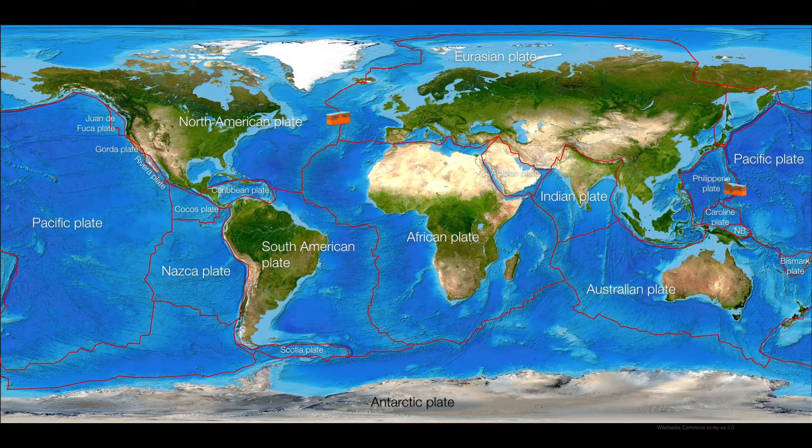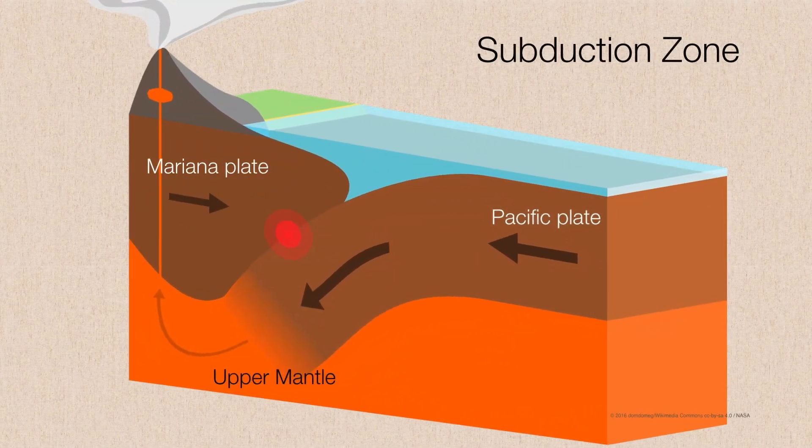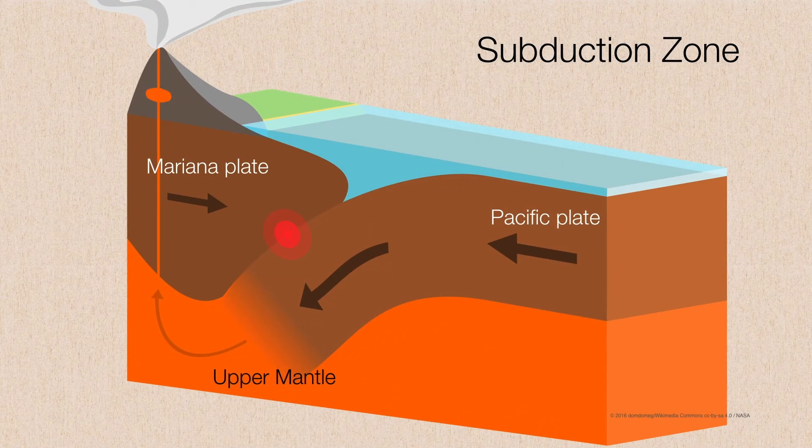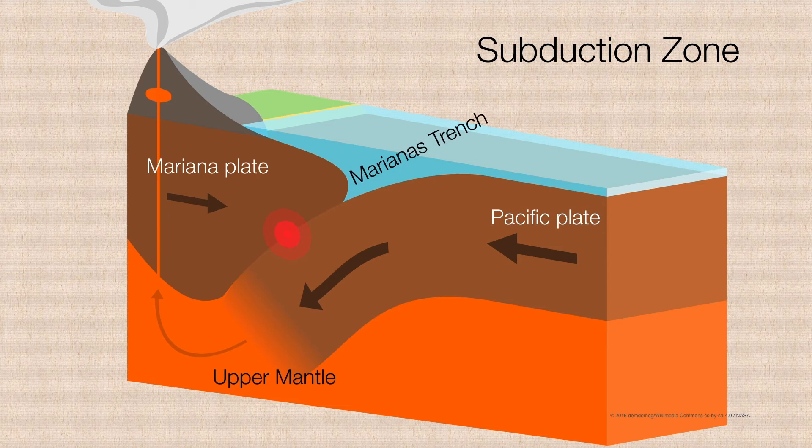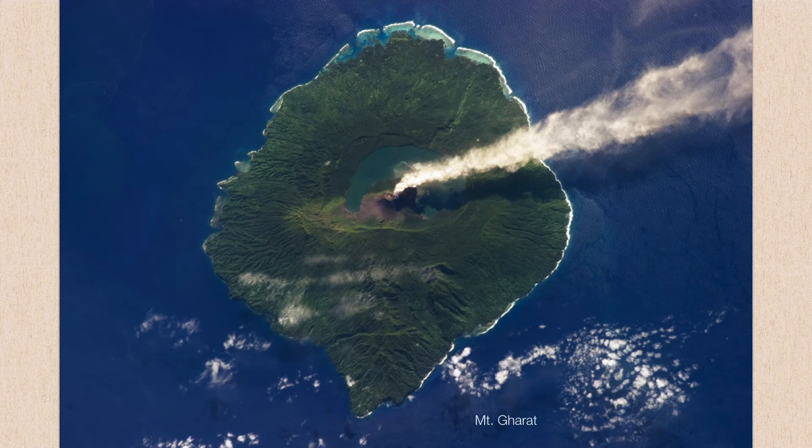The second type is when you have a plate that is tucking under another plate and dragging that plate down with it. So the Pacific plate is dragging the Mariana plate down, forming what's called a subduction zone. And this is responsible for the Marianas Trench, which represents the deepest part of Earth's ocean anywhere on the planet. And sometimes that material is squeezed out through a volcano. And these volcanoes act as a cooling mechanism for the planet.